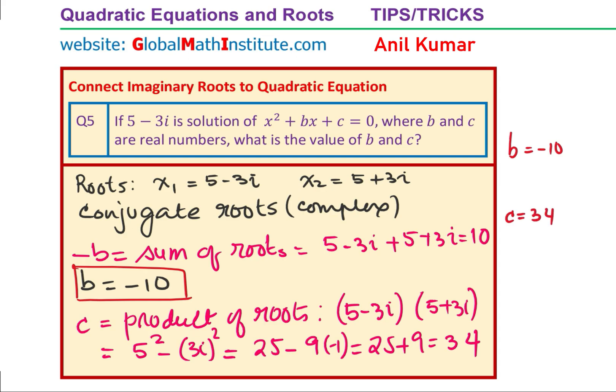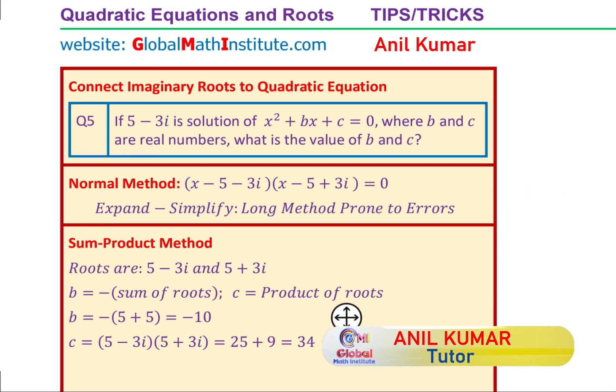And how did we find? We find b as negative sum of roots and c as product. So that becomes your shortcut trick for doing such questions. You could actually summarize the solution as given here. What we saw is that the normal method of writing them as a factor and simplifying is actually prone to errors, and it is long. Instead, we could adopt our strategy of sum and product. Since the two roots are given to us, we know b is negative sum of the roots, c is the product of the roots. And so we get our answer very clearly.